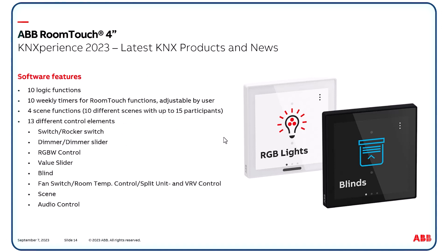Ten logic functions — AND, OR gate and more — are available. Ten weekly timers for the parameterized Room Touch functions can be adjusted by the user. Four scene functions, each with 10 different scenes and up to 15 participants. We have 13 different control elements: switching, dimming, RGB white control with colored lighting, sending values, shutter and blind control. For HVAC there is fan and room temperature control, as well as split unit and VRV control. Scenes can be operated and even audio control is possible.